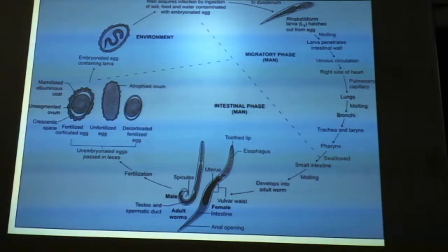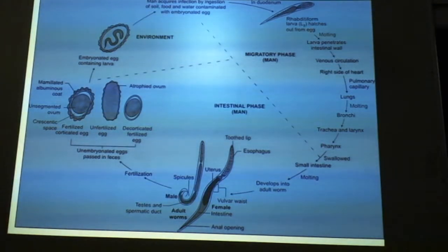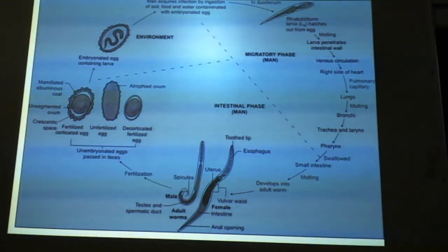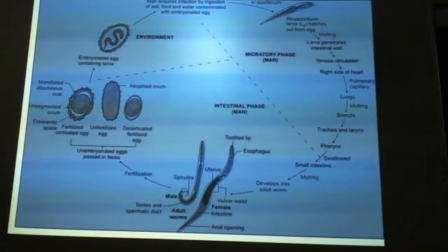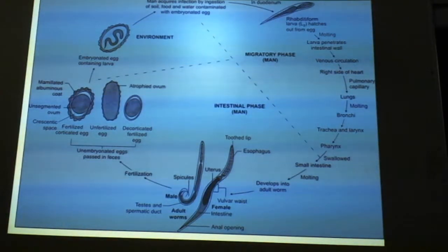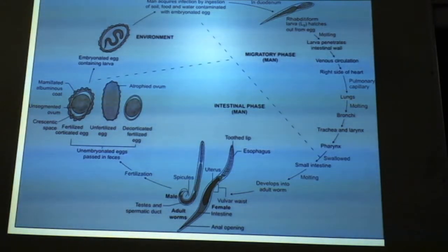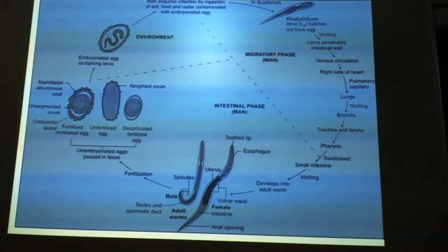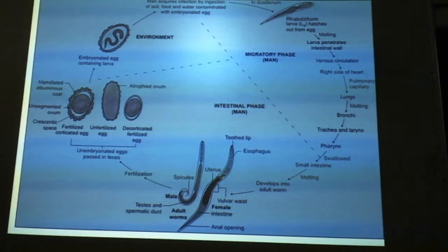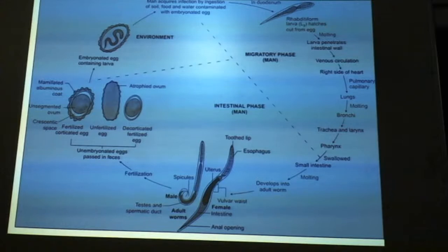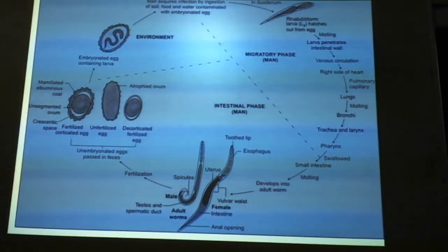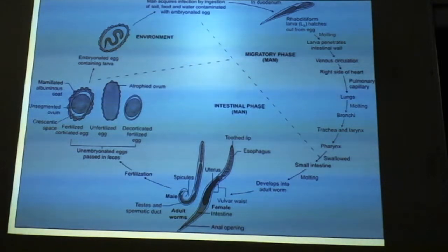Man acquires infection by ingestion of soil, food, and water contaminated with embryonated eggs. Similar to Trichuris trichura, it mainly gets transmitted through contaminated soil, food, and water. There will be different phases: it may be swallowed and directly enter the intestine, or go into the duodenum. There will be different larval forms, and a rhabditiform larva hatches out from the egg.